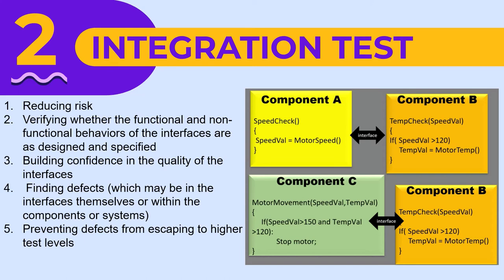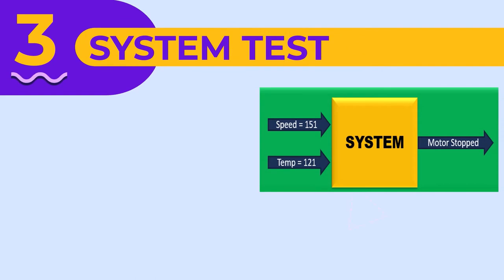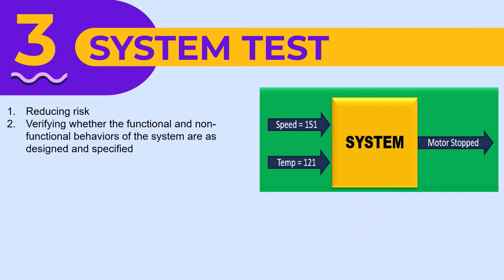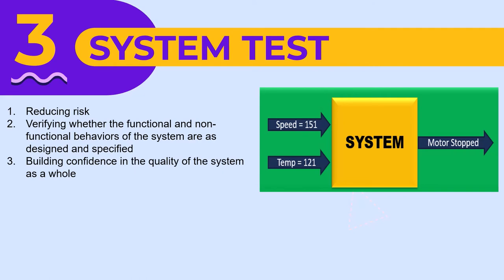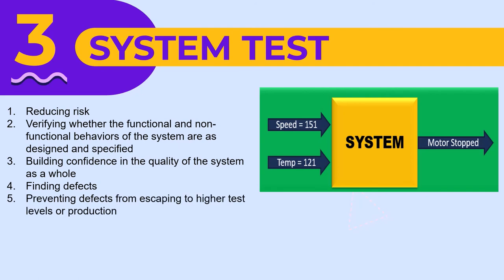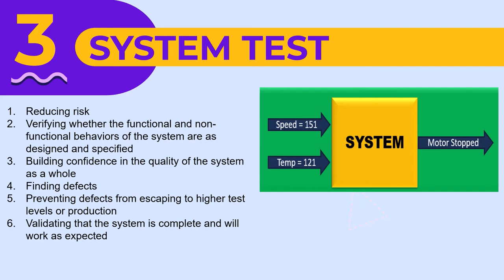The third level is system testing. The objectives of system testing are: to reduce risk; verifying whether the functional and non-functional behaviors of the system — the term system is important here; building confidence in the quality of the system as a whole; finding defects in the system; preventing defects from escaping to higher test levels or production. And a new point: validating that the system is complete and will work as expected. Since we have the complete software here, which is planned for release, we can perform validation on it.